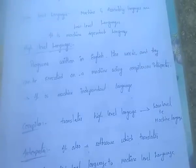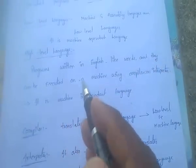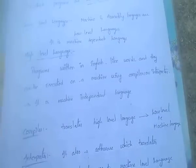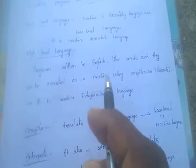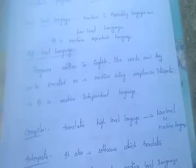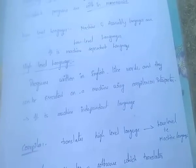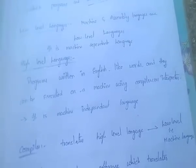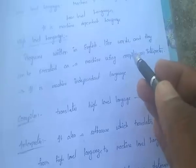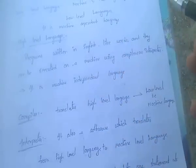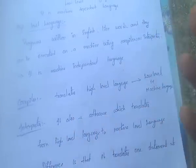High-level language: programs are written in English-like words and can be executed on a machine using a compiler or interpreter. High-level language is a machine-independent language. An example of a high-level language is C language. A compiler translates high-level language into machine language — that is, into binary form of information.